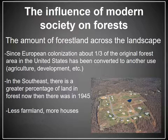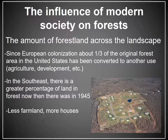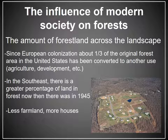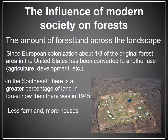Before we get into some of these principles of management planning, we really need to talk about some of the ways in which we as a society have had an impact on the forest resources of the country. The first and perhaps most obvious is that through different land use practices, we've altered the actual amount of forest land present. The two primary land uses that come into play here are the conversion of forest land to agricultural land and the conversion of forest land to residential, commercial, or industrial development. Since colonization, we have converted about a third of the original forest land in this country to some other use.